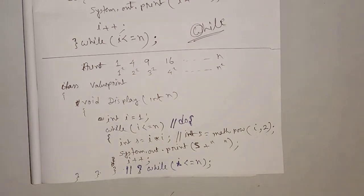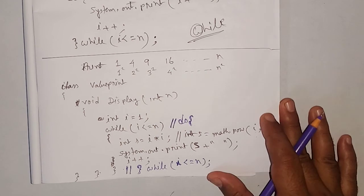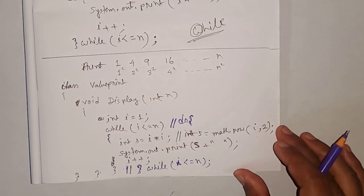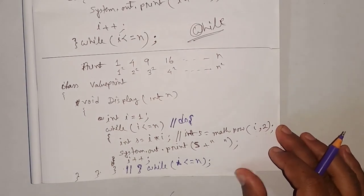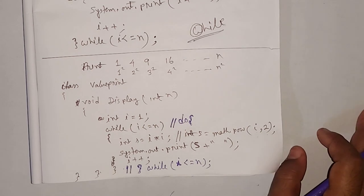This type of question comes in the exam — in ICSC exam a two-mark short question is present: how to convert one loop to another loop. This type of question is present. I think this portion is covered. If you are new to my channel please like and subscribe for more videos.